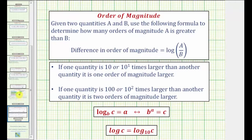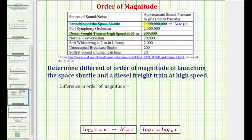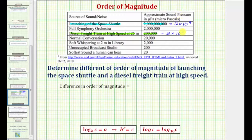Now going back to our example, let's write the sound pressure in scientific notation. Two billion would be equal to two times ten raised to the power of — to form the number two from two billion, we have to move the decimal point left nine places. So two billion is equal to two times ten to the ninth. And for two hundred thousand, in scientific notation, we have two times ten raised to the power of — moving the decimal point to the left five places. So two hundred thousand is equal to two times ten to the fifth.